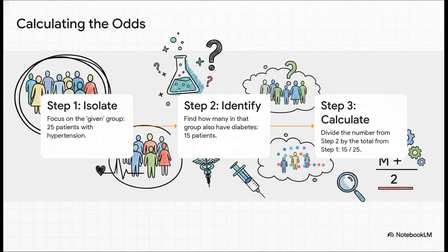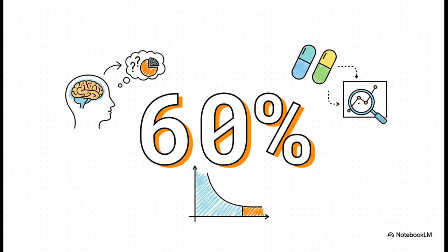Step one, we completely ignore everyone who doesn't have hypertension. Our new universe, our new total, is just those 25 people. Step two, we look inside that smaller group and find the ones we care about, the 15 who also have diabetes. And finally, step three, we do the math. It's just 15 divided by 25. And what do we get? 0.6, or 60%.